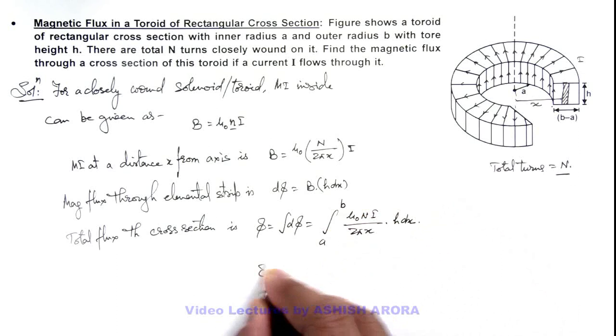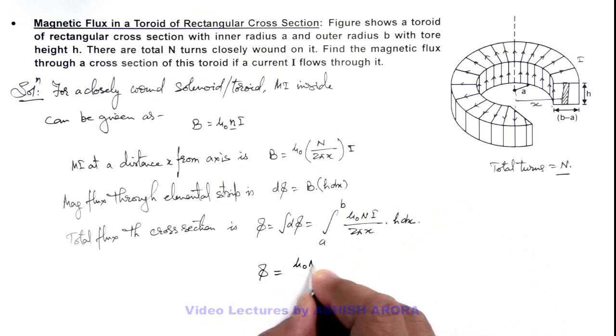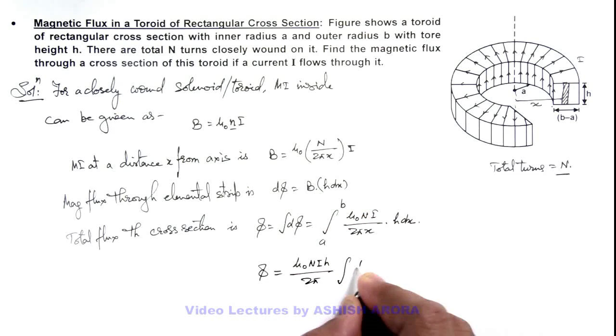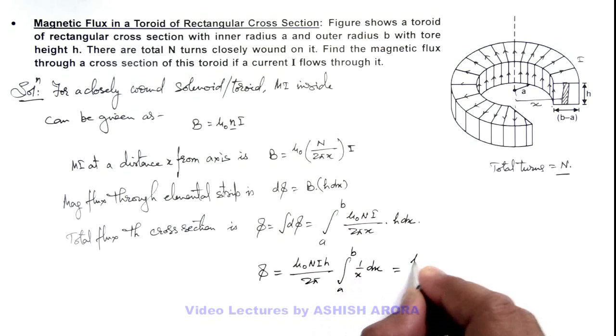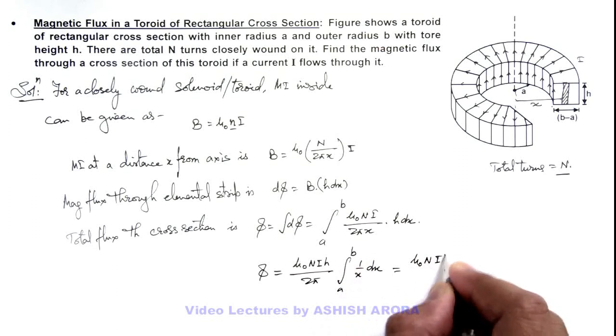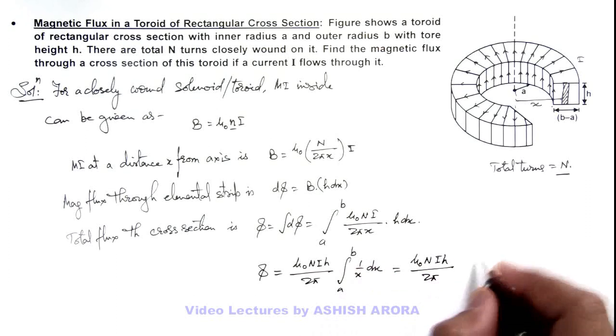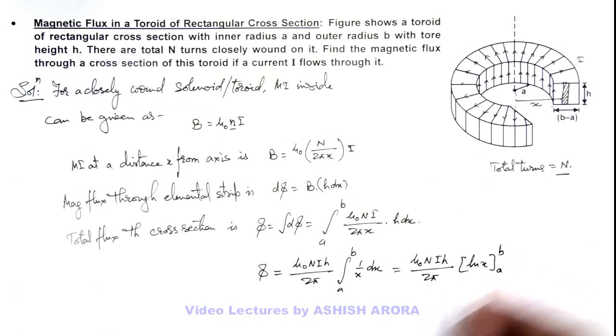This flux will be given as φ = (μ₀NIh)/(2π) times the integration of (1/x)dx from a to b, which will result in (μ₀NIh)/(2π) times ln(x) evaluated from a to b.